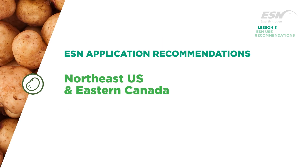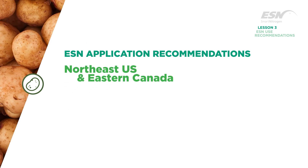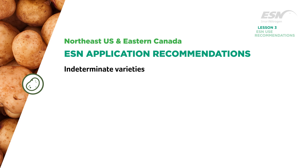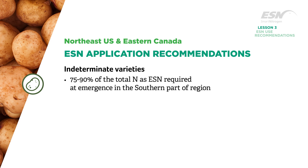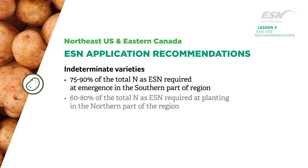In the Northeastern United States and Eastern Canada, indeterminate varieties need 75 to 90 percent of the total nitrogen as ESN at emergence in the southern part of the region, and 60 to 80 percent of the total nitrogen as ESN at planting in the northern part of the region.